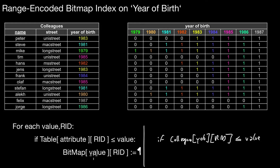Let's look concretely at the value 1982. For row ID zero, the year of birth is greater than 1982, so this is zero. Looking at the next row — is the value smaller or equal? Yes, so we set it to one. The next one, yes, set it to one. The next one, no, it's bigger — zero. Is this one smaller or equal? It's equal, so we set it to one. That is how we assign those bits — the bits in the bitmap change their meaning.